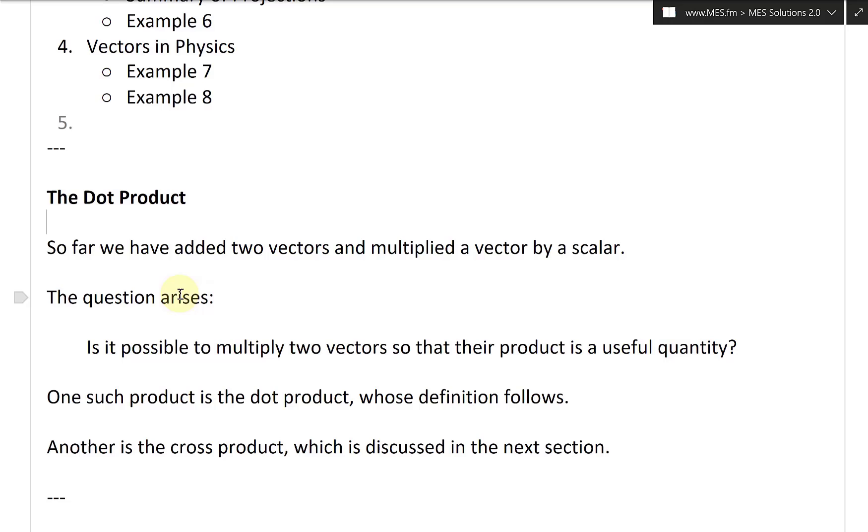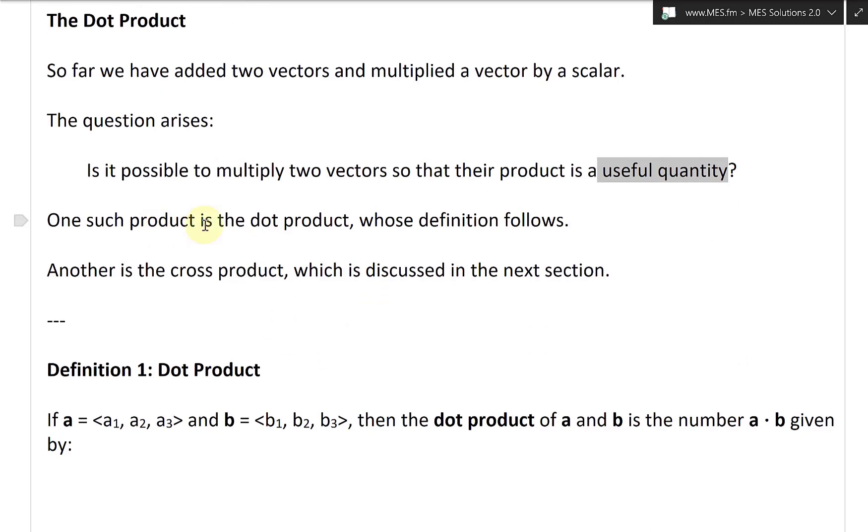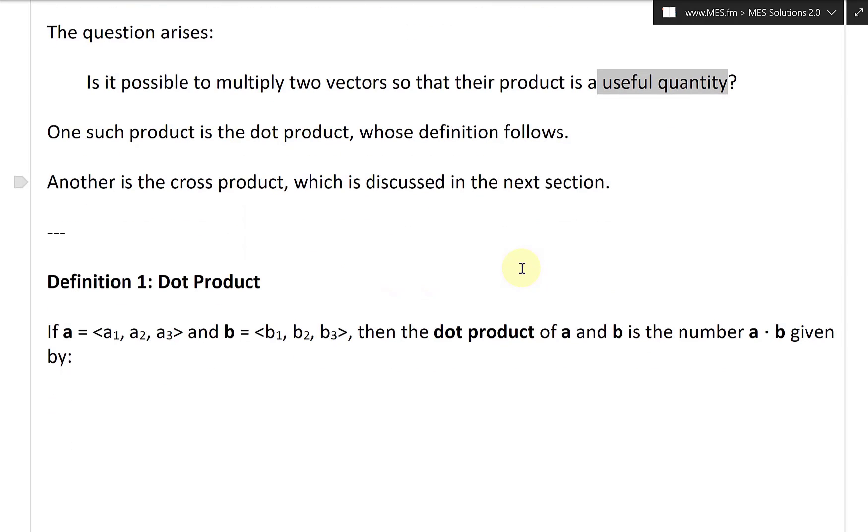But then the question arises: is it possible to multiply two vectors so that their product is a useful quantity? And one such product is the dot product, whose definition follows.